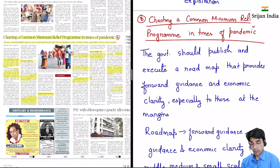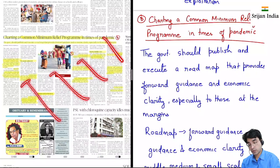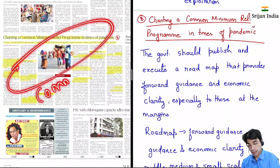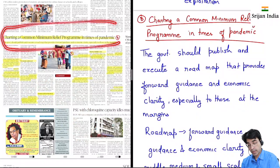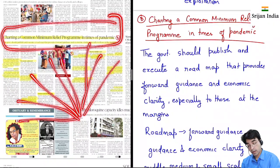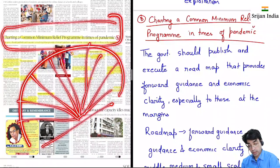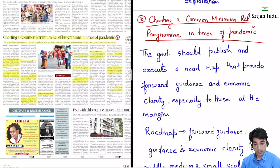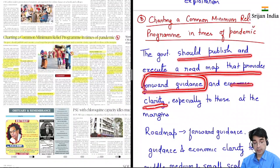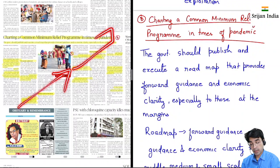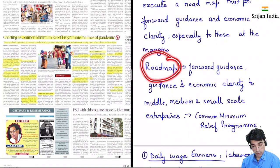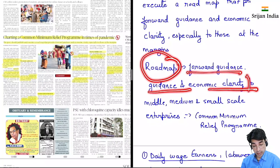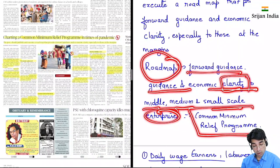Creating a common minimum relief program in times of pandemic. Jab kaafi log milke kaam karte hain toh har kisi ki soch alag hoti hai, so we work on common minimum — coalition government bhi isi common minimum pe kaam karti hai. Ab because yeh pandemic aisa hai ki isne har section of society, har political party, har person ko impact kiya hai, toh sab logon ko ek combined approach lani padegi. Government should publish and execute a roadmap that provides forward guidance and economic clarity, especially to those at the margins. Clarity honi chahiye to middle, medium, and small scale enterprises.